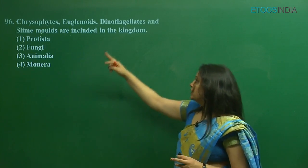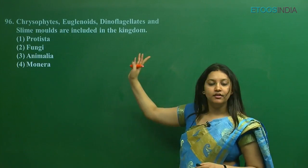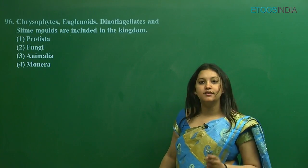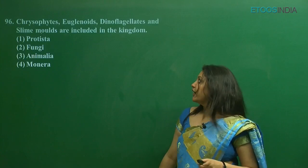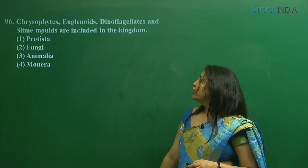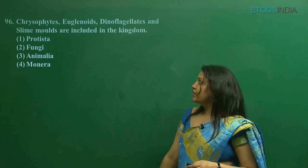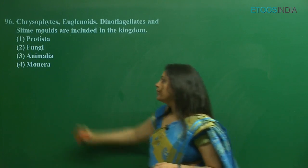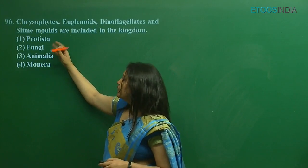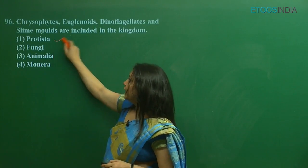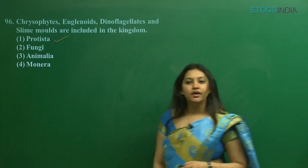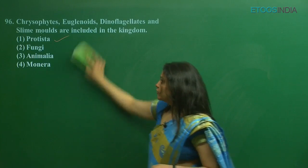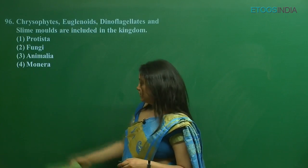Under the Protista kingdom come all four groups: chrysophytes, euglenoids, dinoflagellates, and slime molds. That is why the first is the correct option regarding this question.